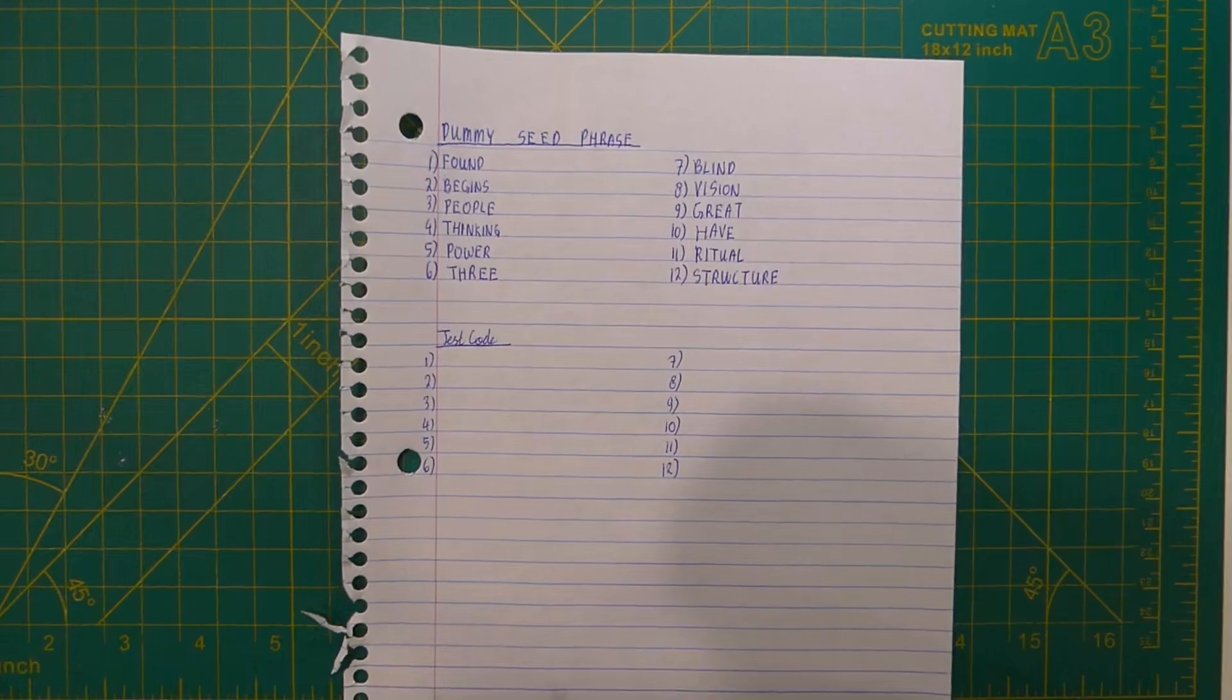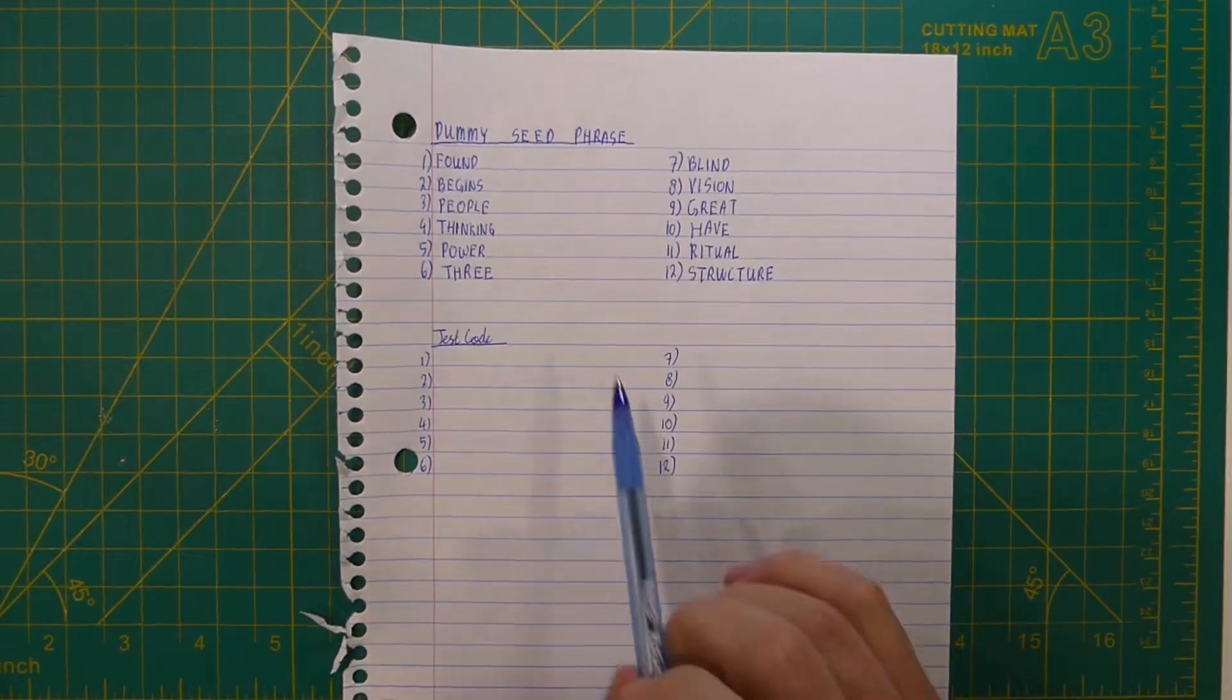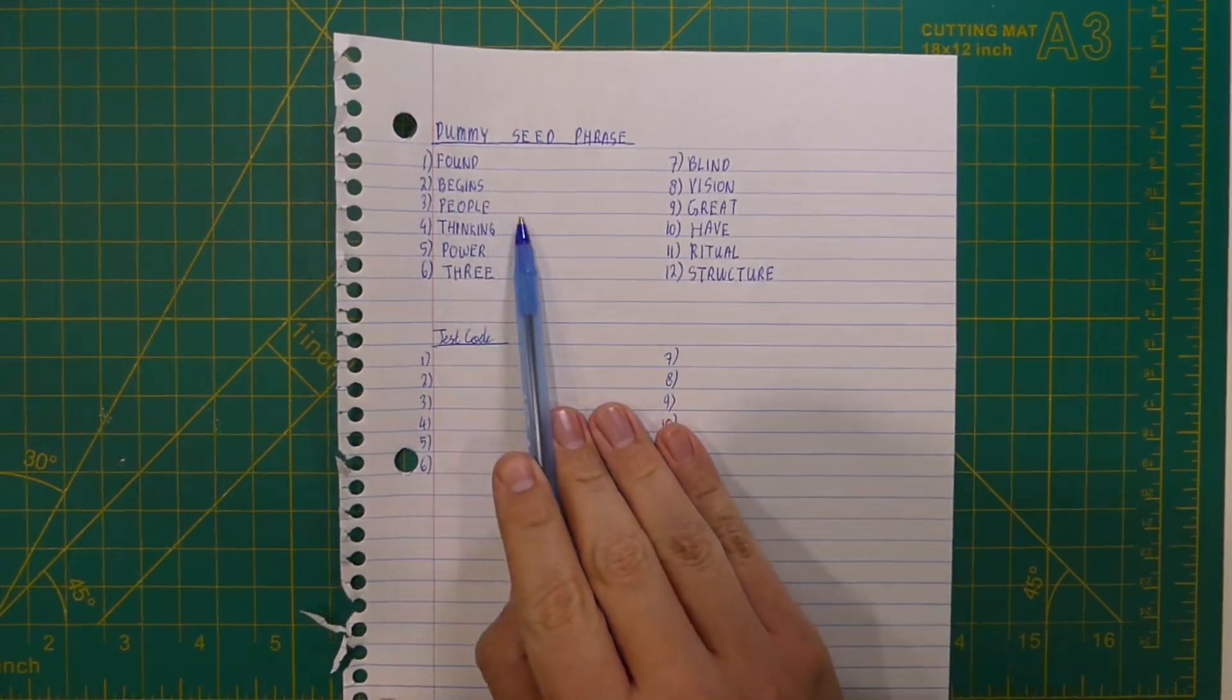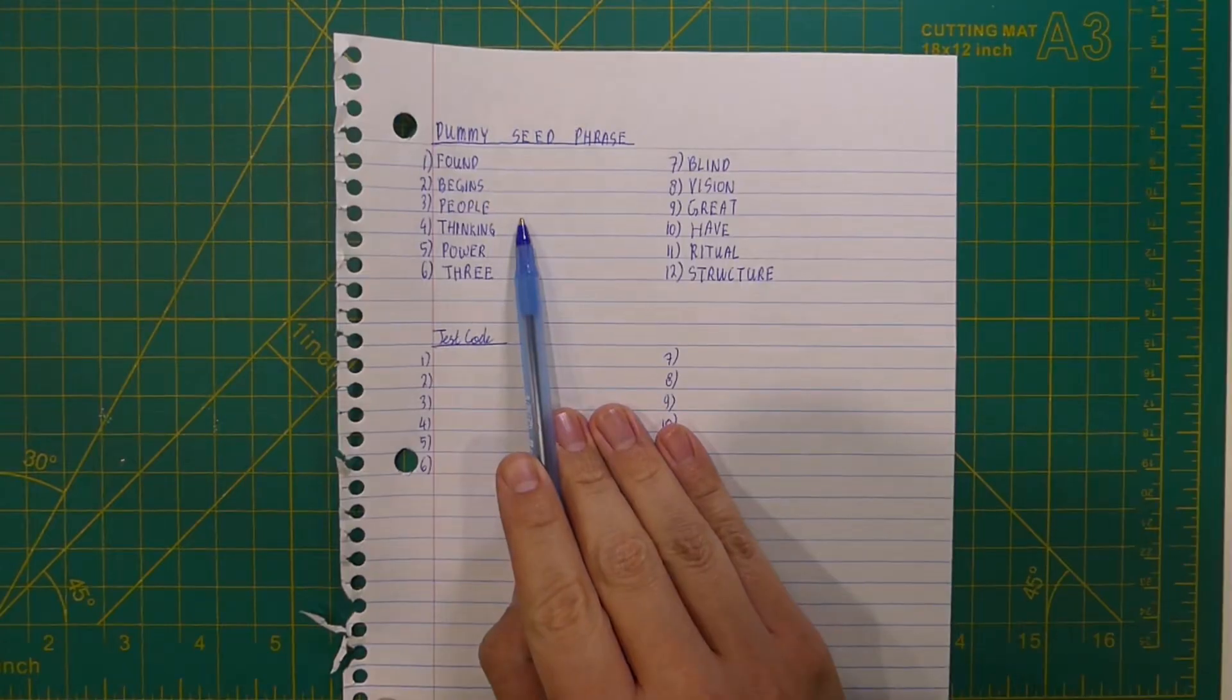This is an example of how I would do this book cipher. Suppose I have this set of 12-word seed phrase.